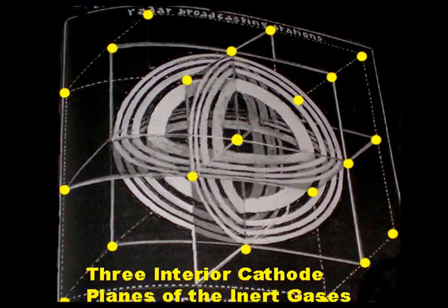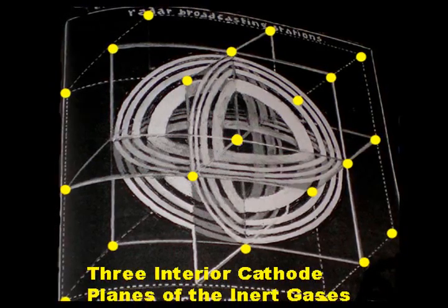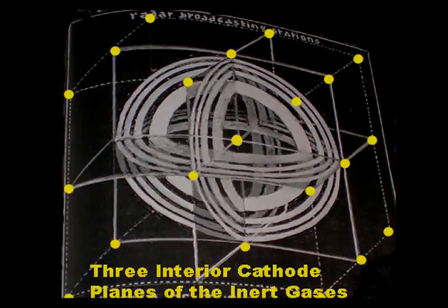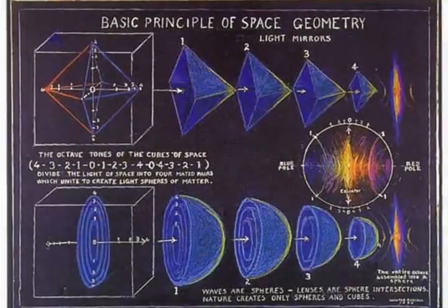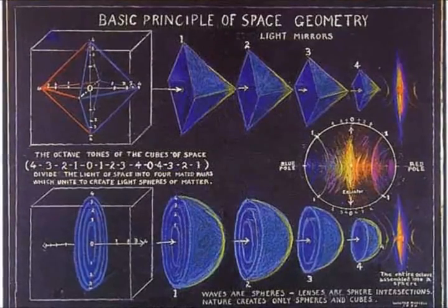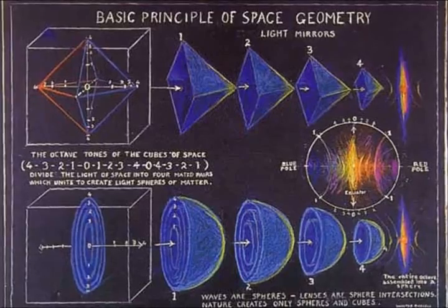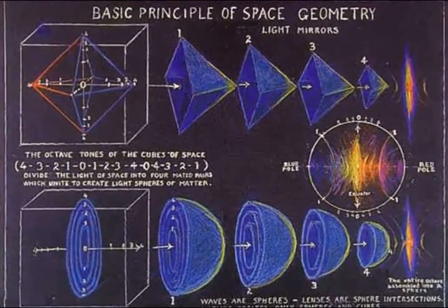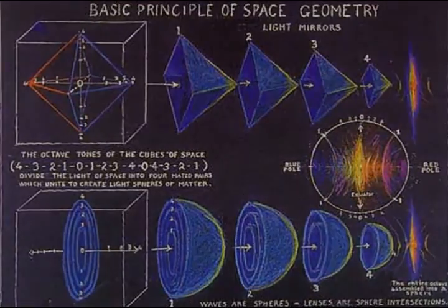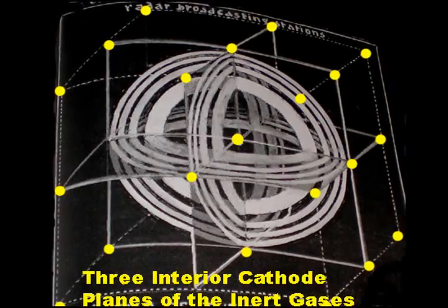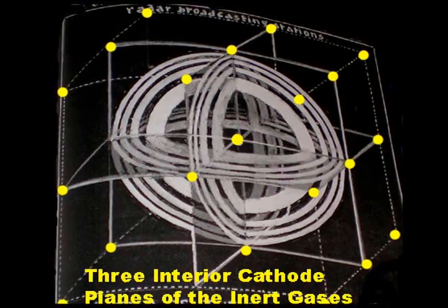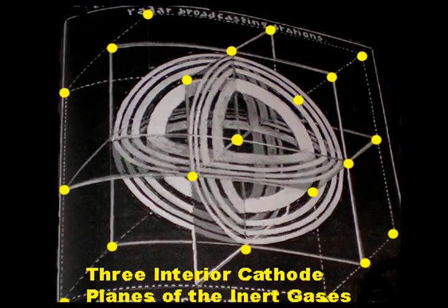Spherical bodies are formed by the intersections of the inert gas rings on the three interior cathode planes of each cubic wave field. This diagram reveals the open holes, or cathode condition of the rings, which give form to the spheres. The spheres are created by the three mutually orthogonal sets of inert gas rings which bound the three interior planes of the cube.